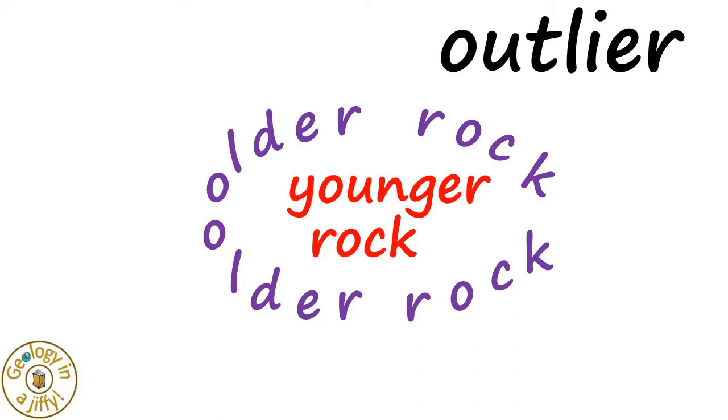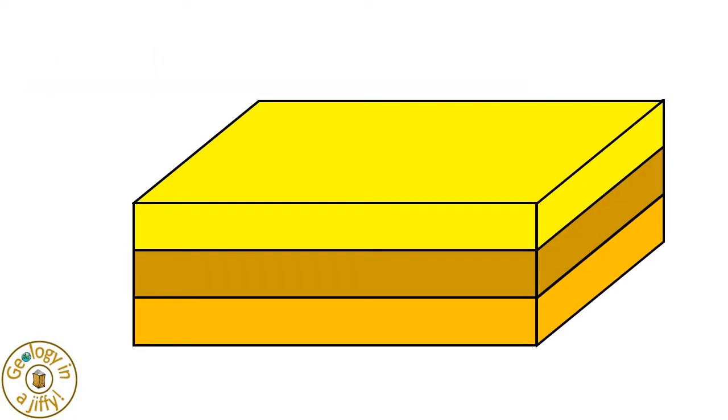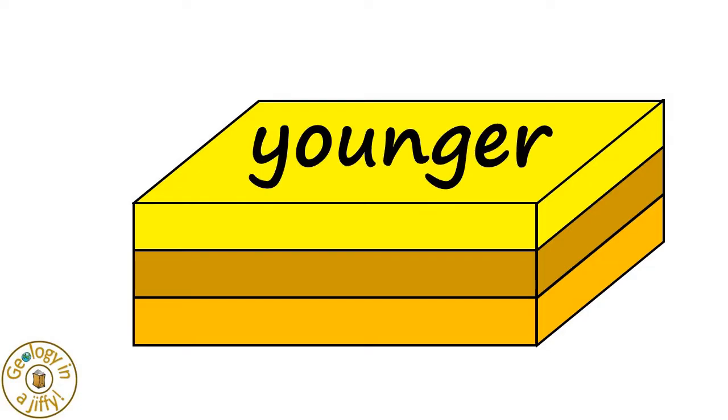A geological outlier is an exposure of younger rock that is surrounded by older rock, leaving it isolated from the same younger rock. Using our block of layered rocks, with a younger layer at the top,